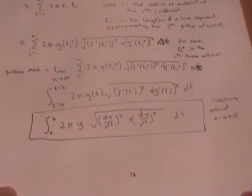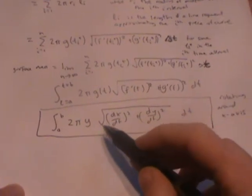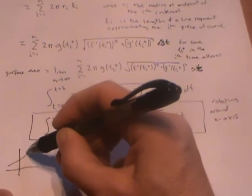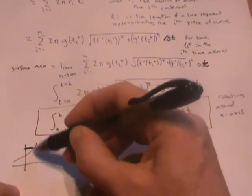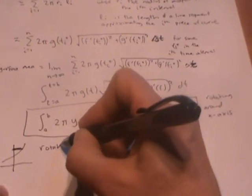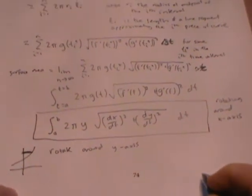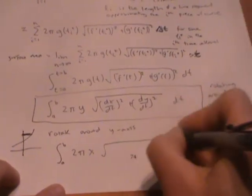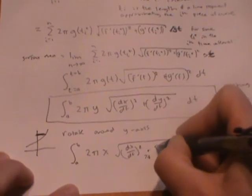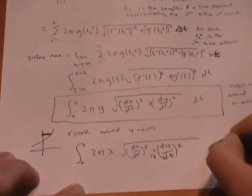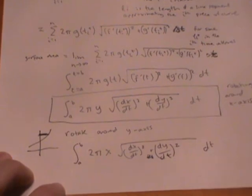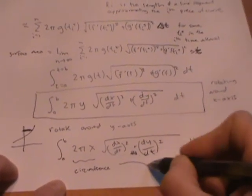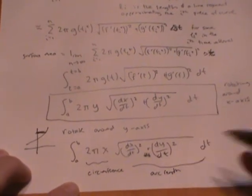Now, if we wanted to rotate instead around the y-axis, the only thing that will change in this formula is that my radius here is going to be coming from my x value instead of my y value. So if I want to rotate around the y-axis, I still go from t equals a to t equals b and I just calculate 2πx times the same little incremental bit of arc length. So my intuition here is that I'm integrating circumference times a little piece of arc length and integrating that.